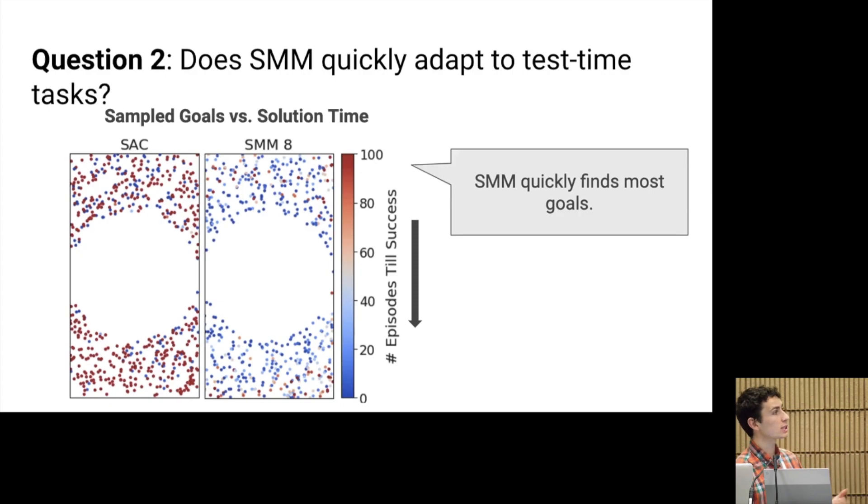So these plots here are showing the goals that we sample at test time. And we're going to color each of the dots by whether the policy succeeded in finding that goal at test time. The red dots on the left plot show that the RL baseline fails to find most of the goals. It fails to do good exploration at test time. In contrast, state marginal matching succeeds in finding most of the goals, as indicated by the red dots on the right.